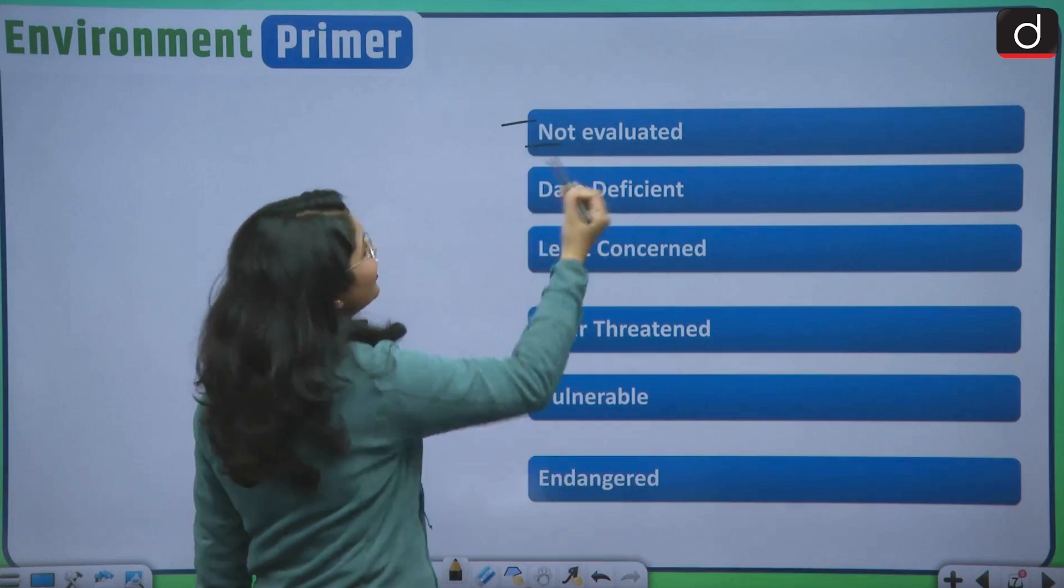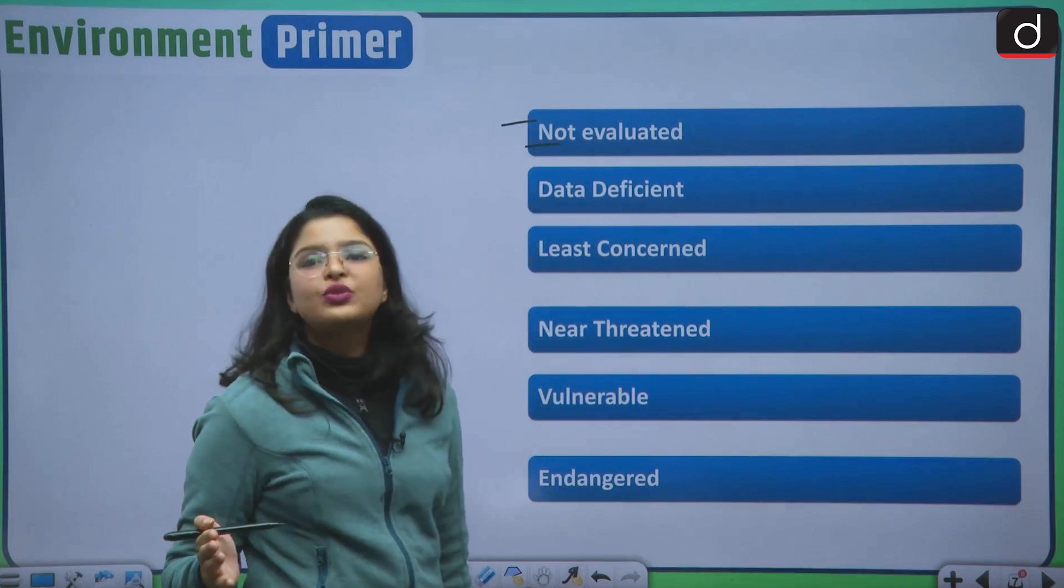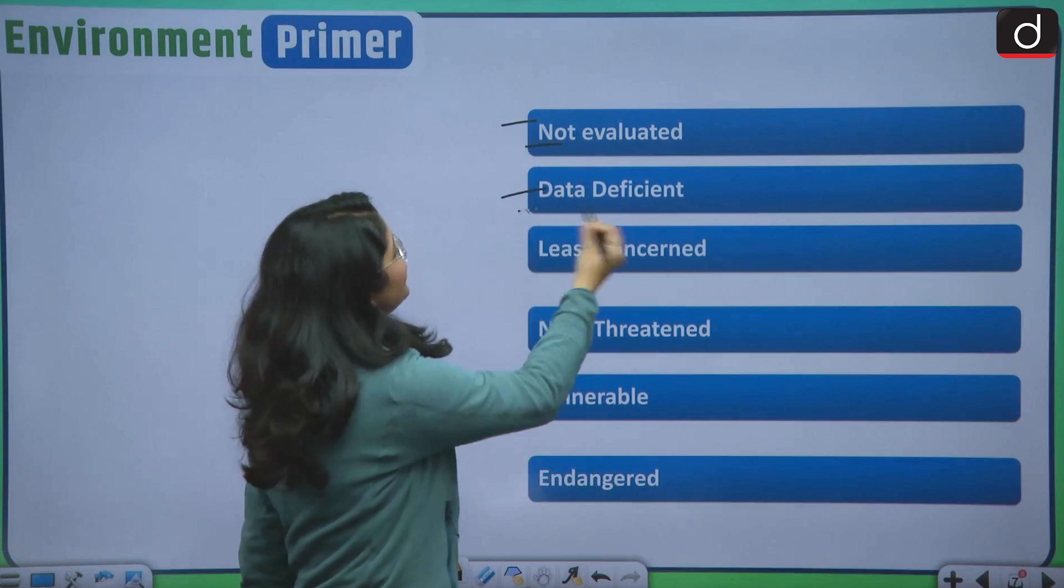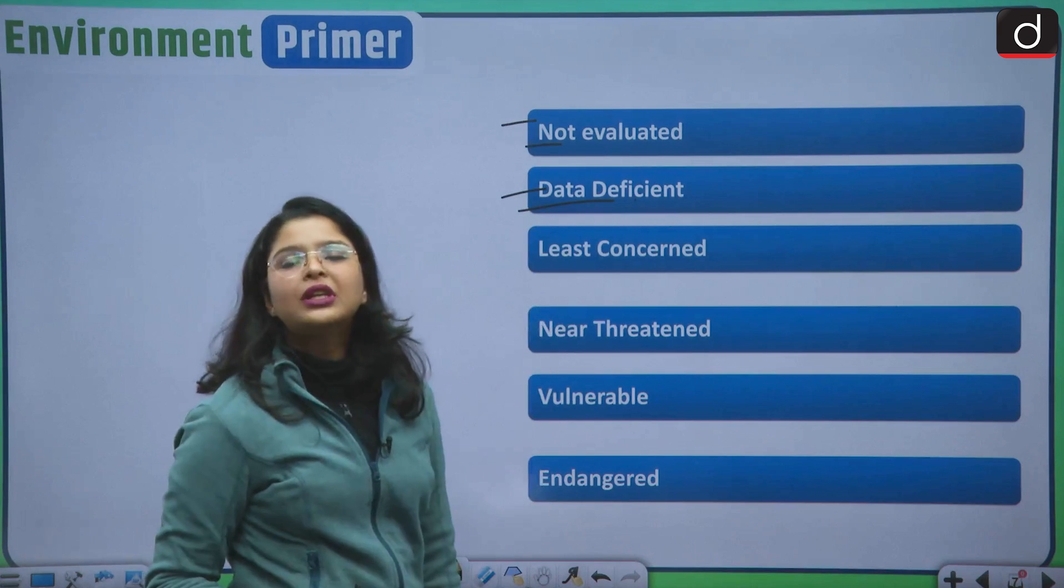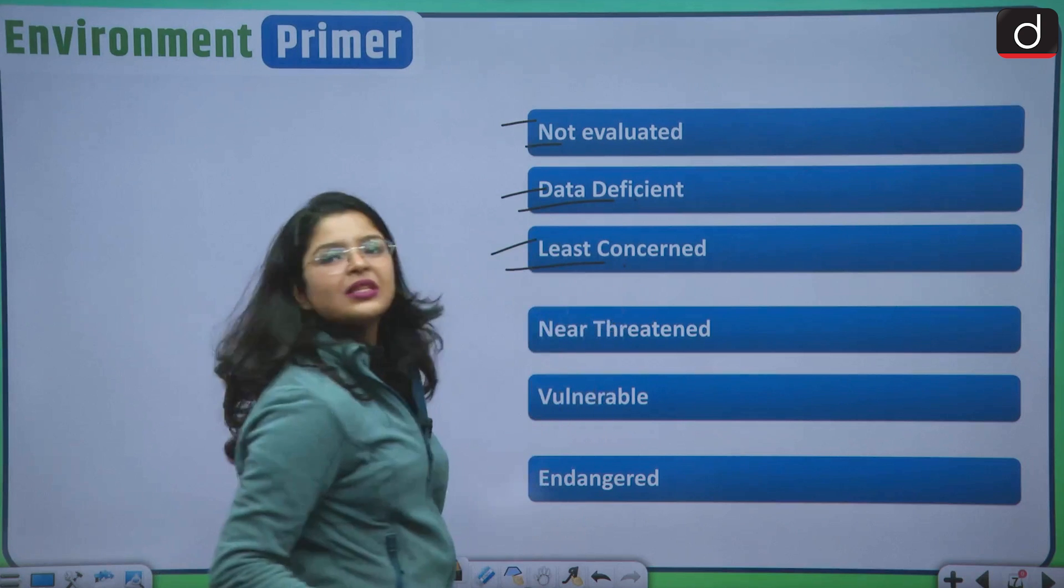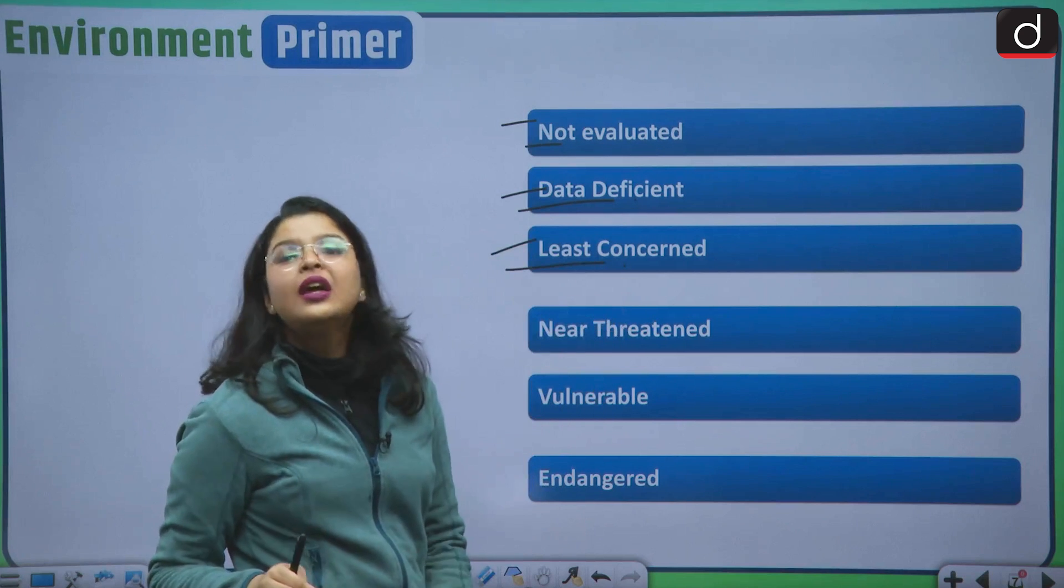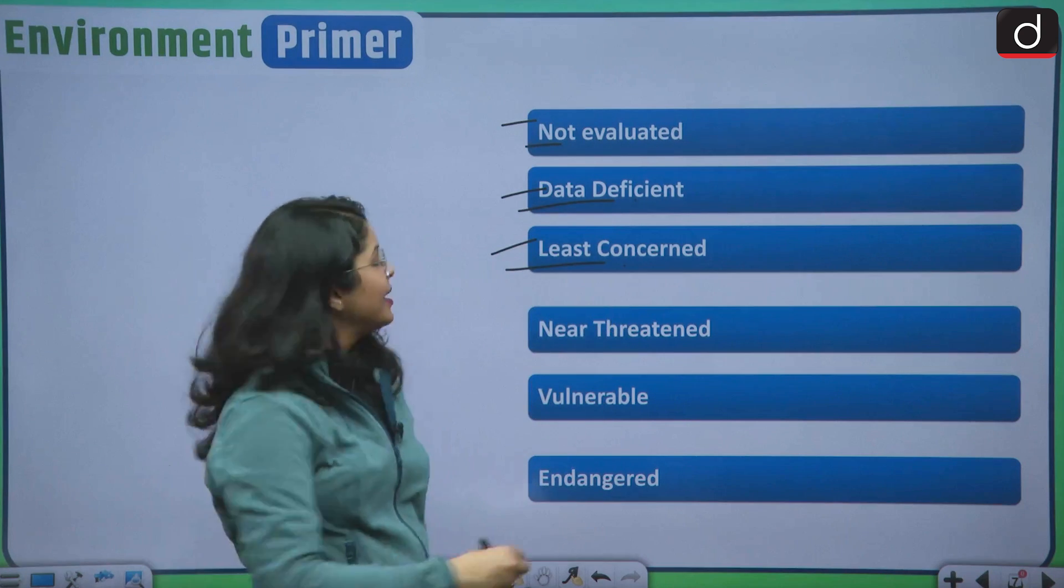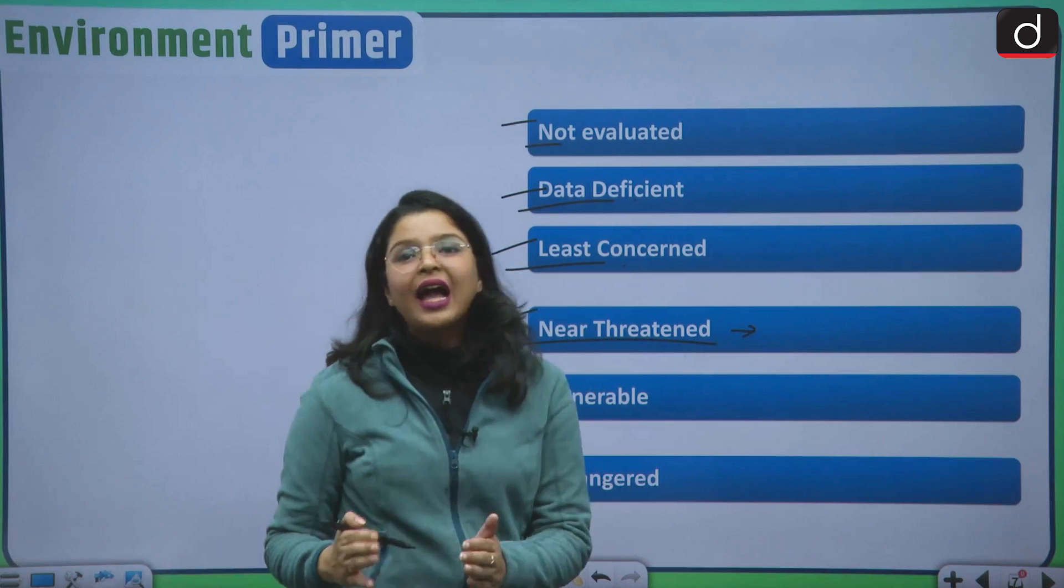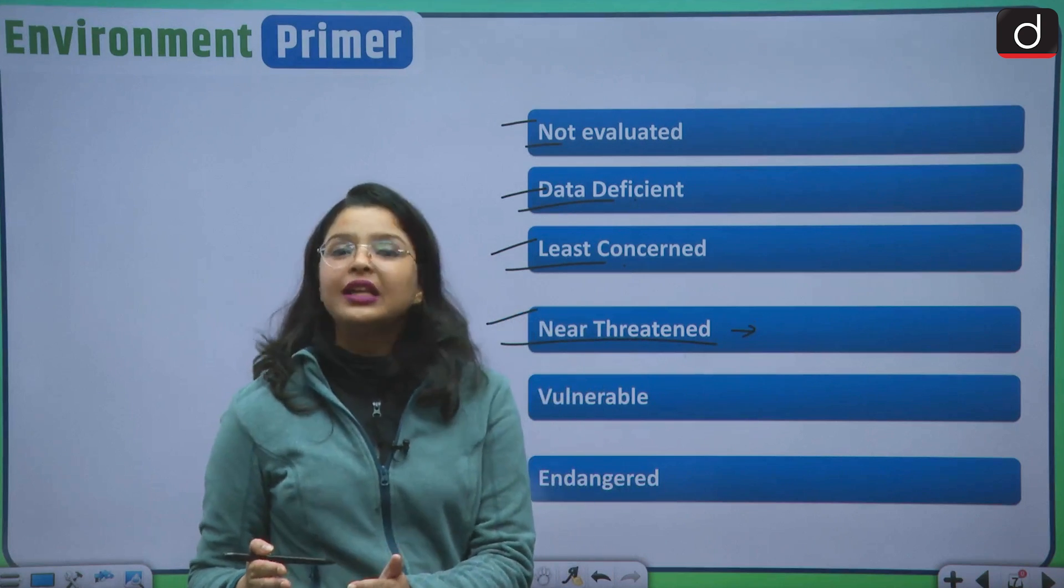The IUCN Red List categories are: firstly, not evaluated. That means we are not considering those species on the IUCN evaluation assessment. Then data deficient. We do not have enough data to determine the extinction risk. Then there is least concerned. That means they are abundant in nature. They are not at that point of risk. Then near threatened. That means they are at high risk of being endangered in the wild.